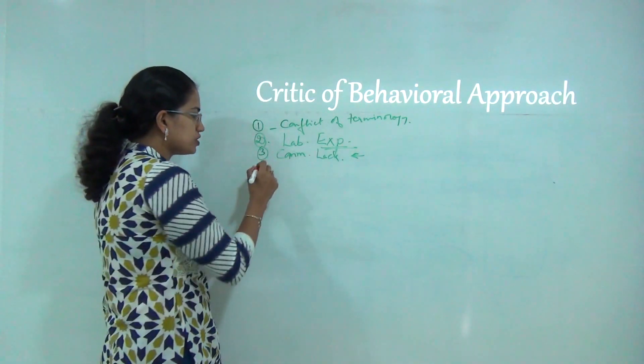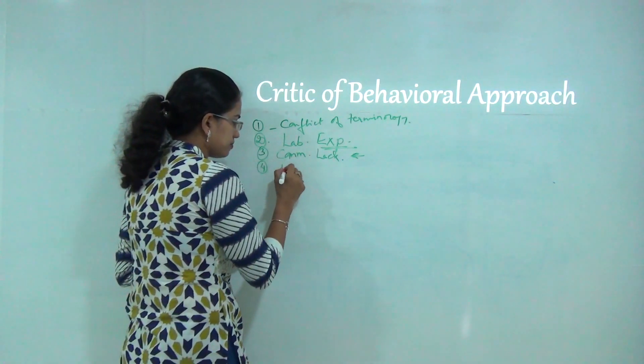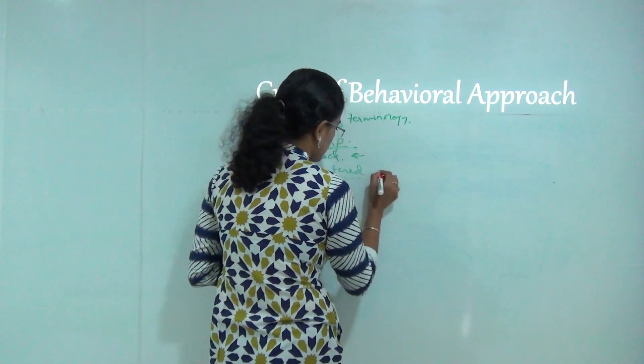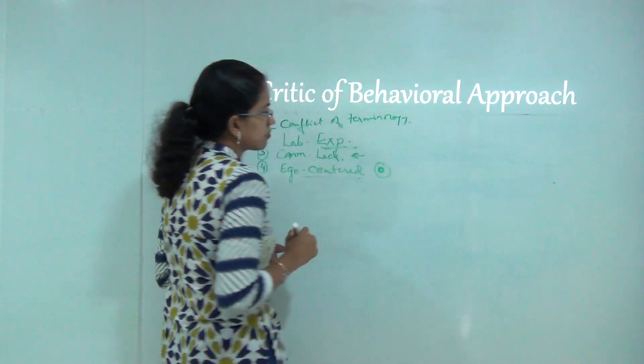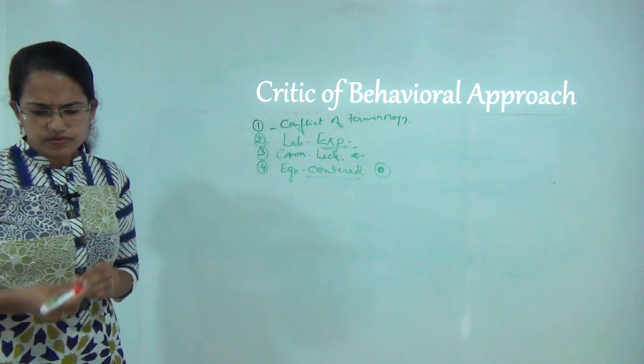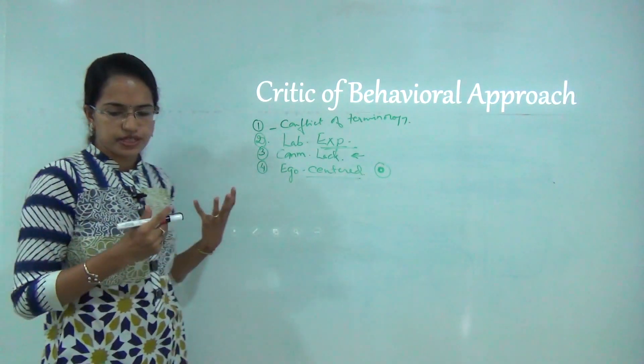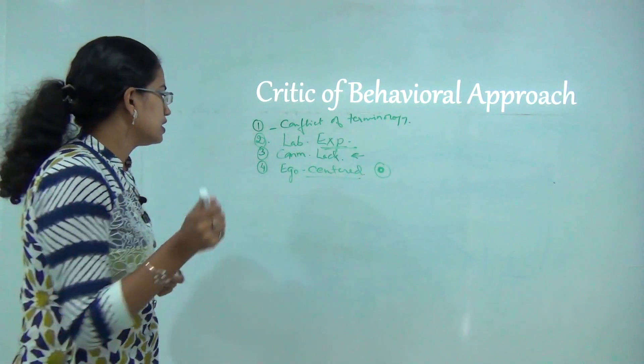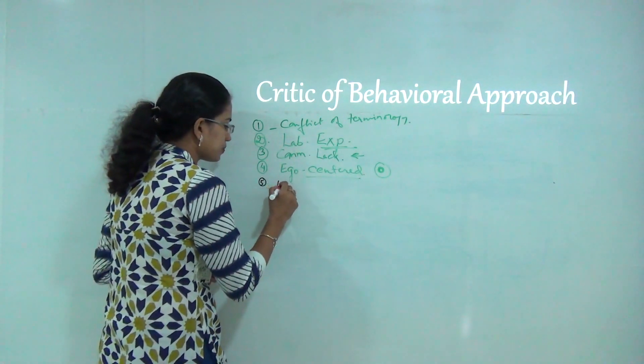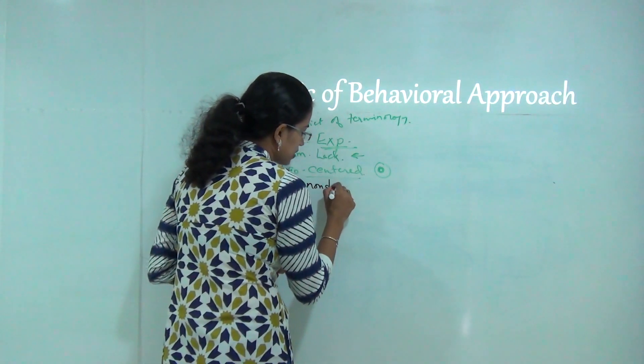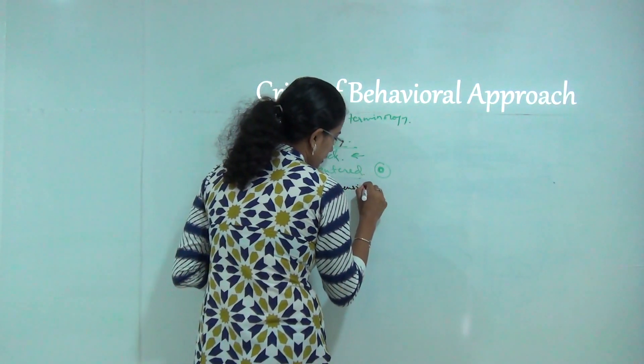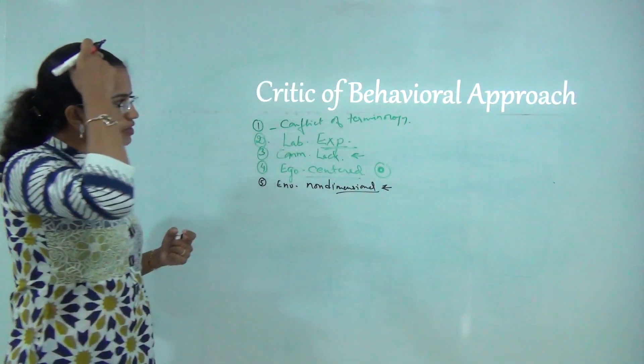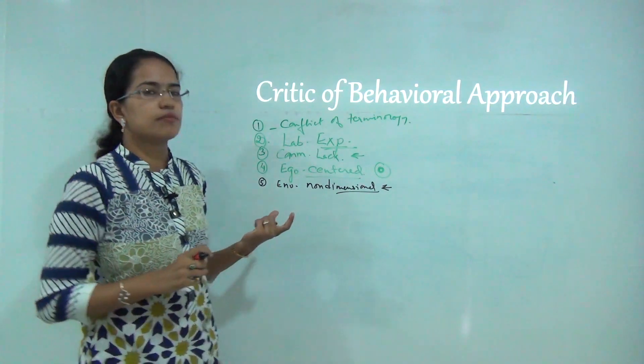It emphasized the egocentric approach of an individual. When I try to give too much priority to an individual, it focuses on the egocentric approach. It tried to treat environment as non-dimensional, and when you consider an environment to be non-dimensional, it is difficult to find out the relationship that you are trying to predict for an individual to that region. That was another major criticism of behavioral approach.